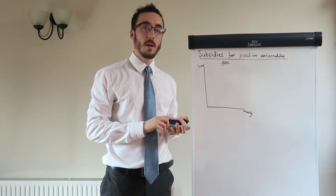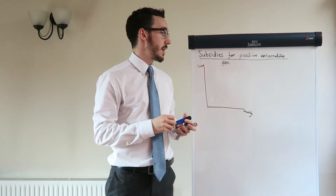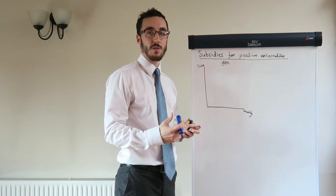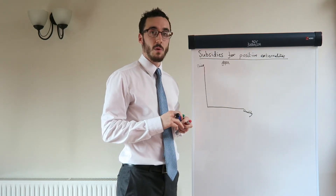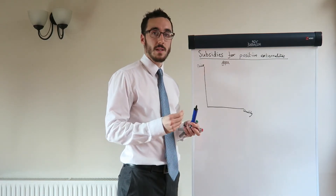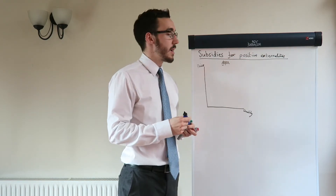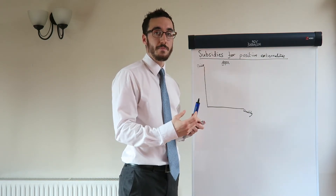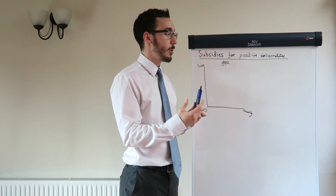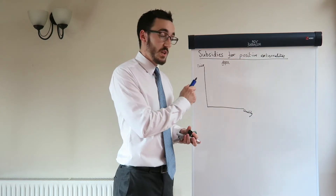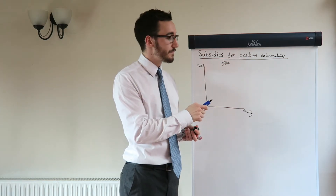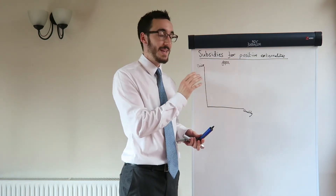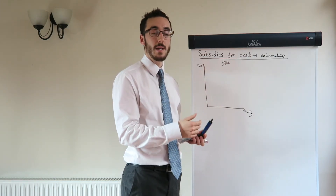A way to increase consumption of positive externalities goods — merit goods like going to the gym — which produce external benefits to society, is for the government to increase consumption of those goods. They don't use taxes because that increases the price. So they use subsidies, which are literally giving money to producers to decrease the cost and therefore decrease the price. If we can decrease the price of a good, consumers will consume more and quantity consumed and produced goes up. So more merit goods are consumed by everybody, which is better for society. The easier way to analyse subsidies is to use a supply and demand graph.